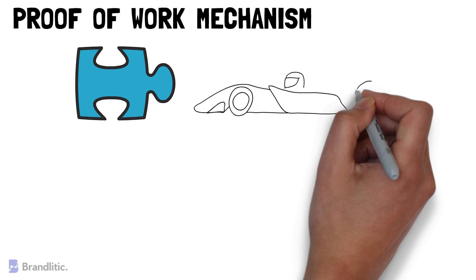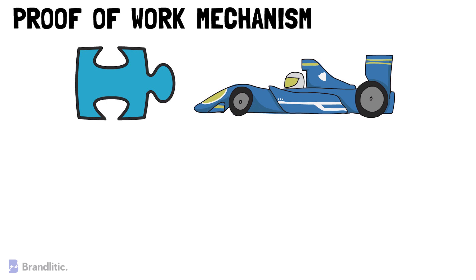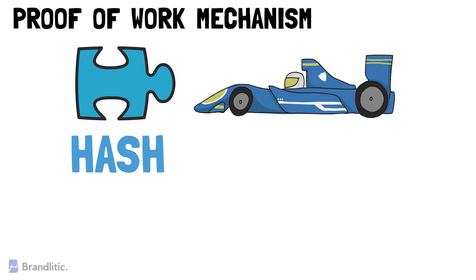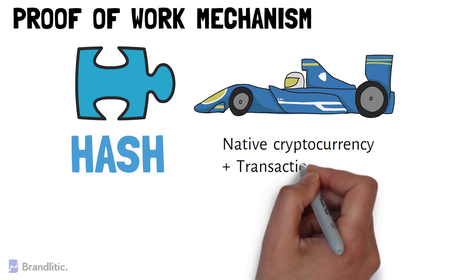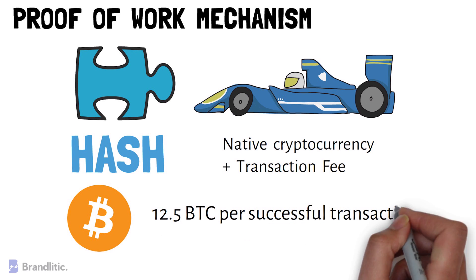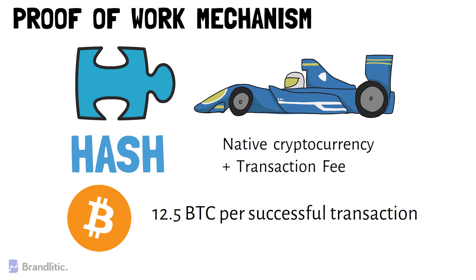You can ideally visualize it as a race, where the miners are competing to be the first one to solve a puzzle. The answer to this puzzle is called a hash. For every successful transaction validation on the network, they are rewarded with the blockchain's native cryptocurrency plus a transaction fee. For example, in the case of Bitcoin, it's 12.5 BTC for one successful transaction.